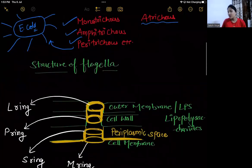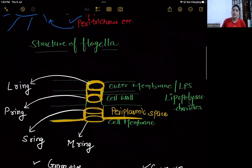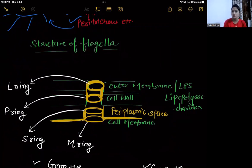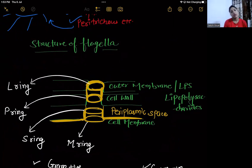The structure of flagella we have already studied: basal body, rod shape, hook, and then filament. The filament is made of flagellin protein, and flagellin protein is a contractile protein. We have already covered this when we studied Cell: Unit of Life.